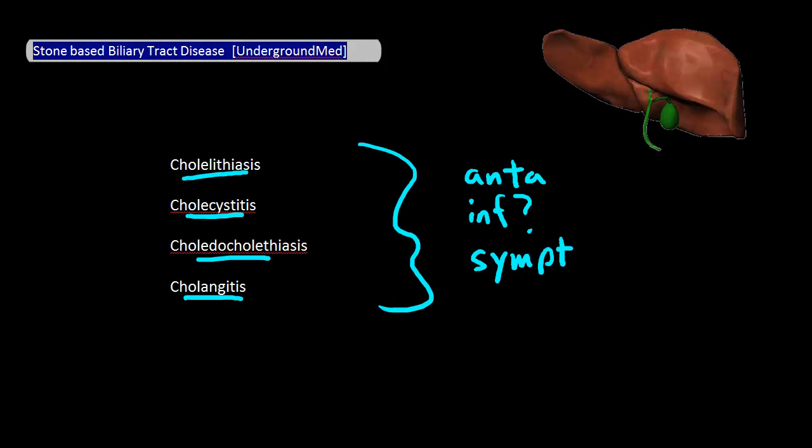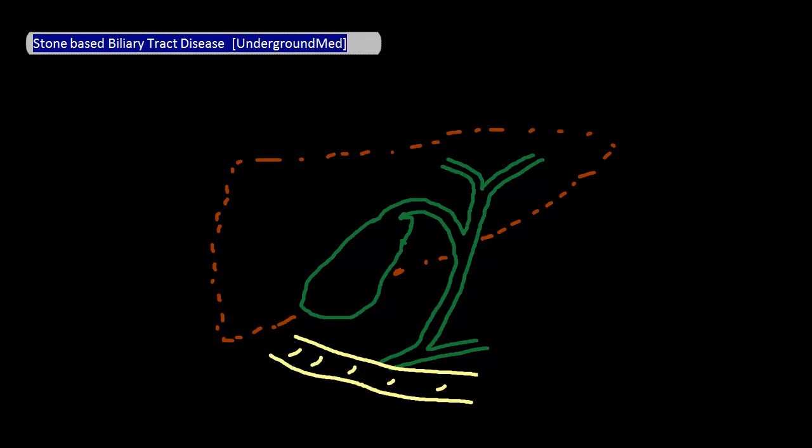Before we start, let's quickly go over the biliary anatomy. The liver produces bile, which then travels through both the right hepatic duct and the left hepatic duct towards the gallbladder and the small bowels. Those two ducts then join to create the common hepatic duct.